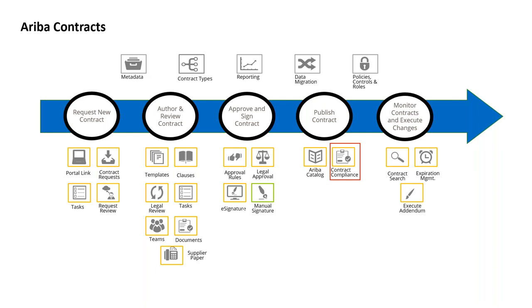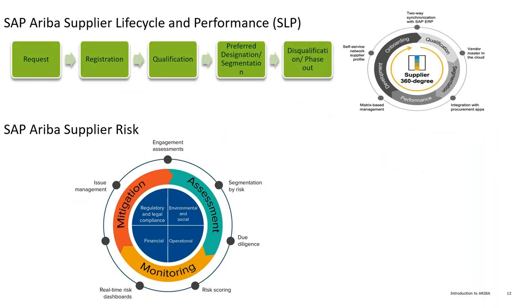In Ariba Contracts, we'll look at the contract lifecycle: what is a contract workspace, contract request, contract compliance, contract amendments, and how to configure digital e-signatures. The contract lifecycle is similar to a rental agreement — you draft it, review terms and conditions, sign it, it goes live, and later you may need to amend it. All of this functionality is covered in the Ariba Contracts module.